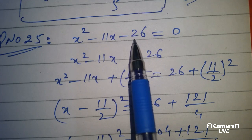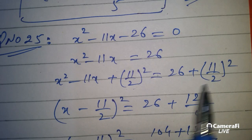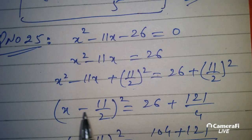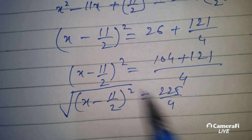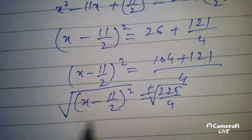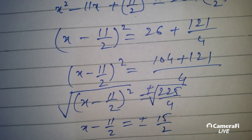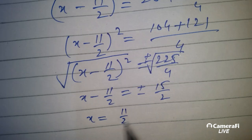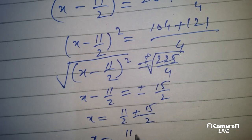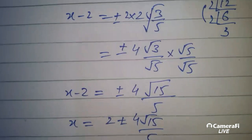Our next question: question number 25. Here we have minus 26, here is 11. So 11 by 2 squared — this is the first line. Here is minus 11 by 2 whole square. Later on, simplify. Now this is the square root. Here is x minus 11 by 2, and this will come from the second direction. If you take this number, this will be plus 11 by 2. There will be two answers — plus and minus.